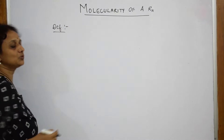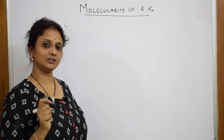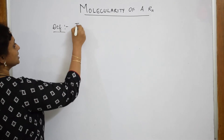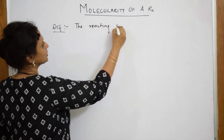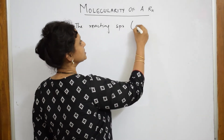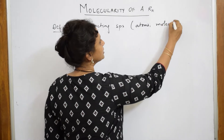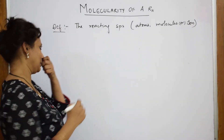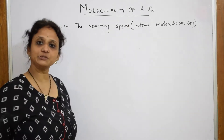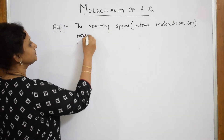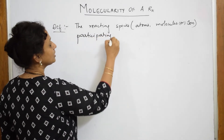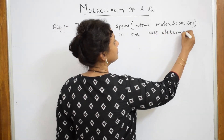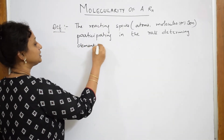What is molecularity of a reaction? Start using the right sentence formation, as it really counts in your definition. The reacting species — and what are these reacting species? Reacting species can be your atoms, it can be molecules, or it can be ions. So your reacting species — write the full form: reacting species like atoms, molecules, and ions — participating in the rate determining elementary step.